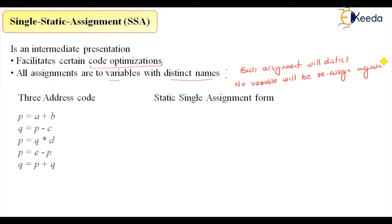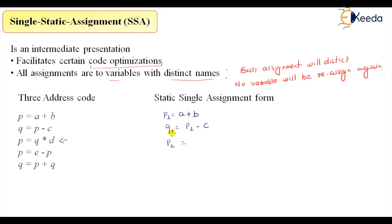We will not assign any variable more than once. For example, p = a + b. In single static assignment form, instead of p, I will use p1. So p1 = a + b. Then q = p - c becomes q1 = p1 - c. Now this next statement assigns p again, but since we assign only once, I will take p2, and q becomes q1 multiplied by d.